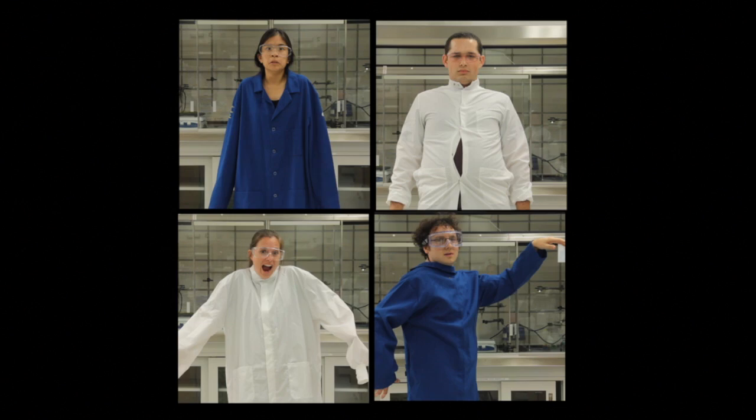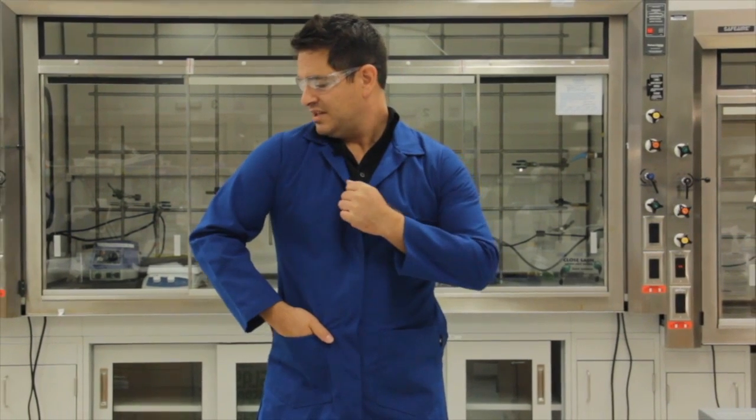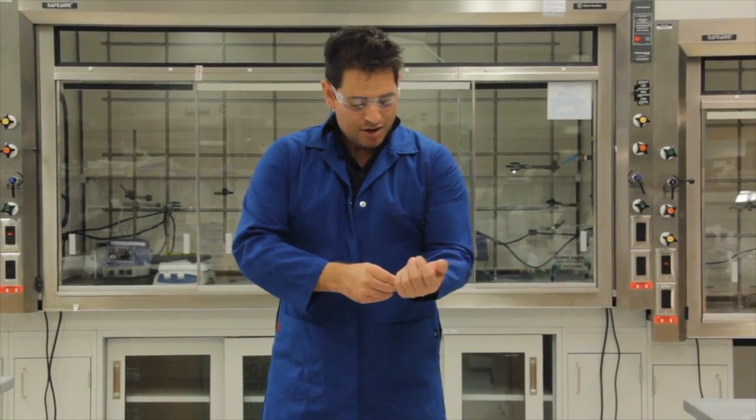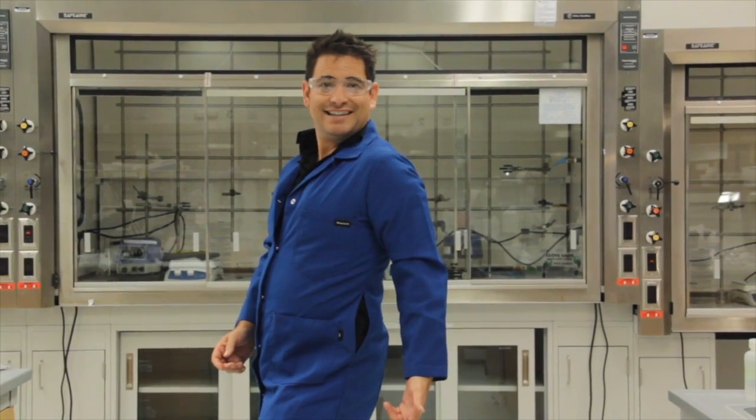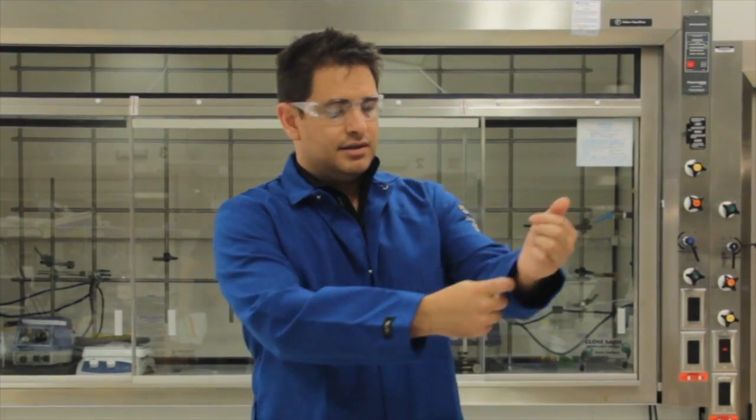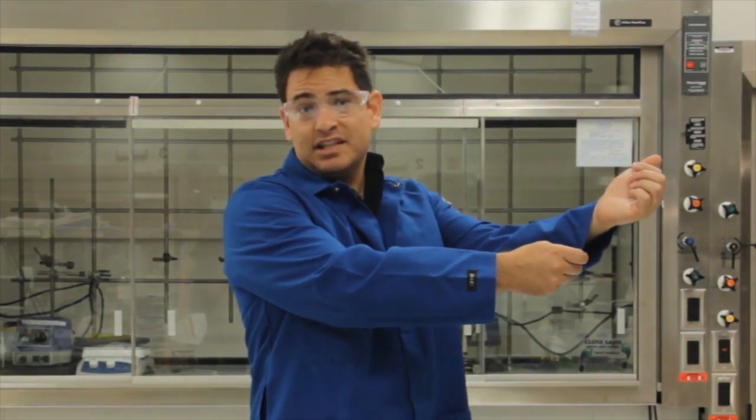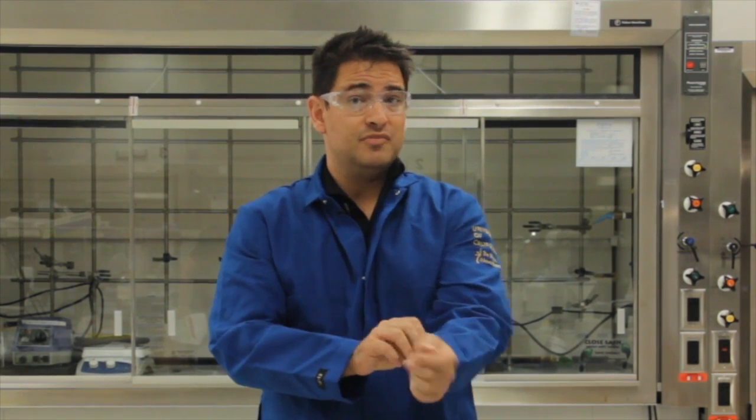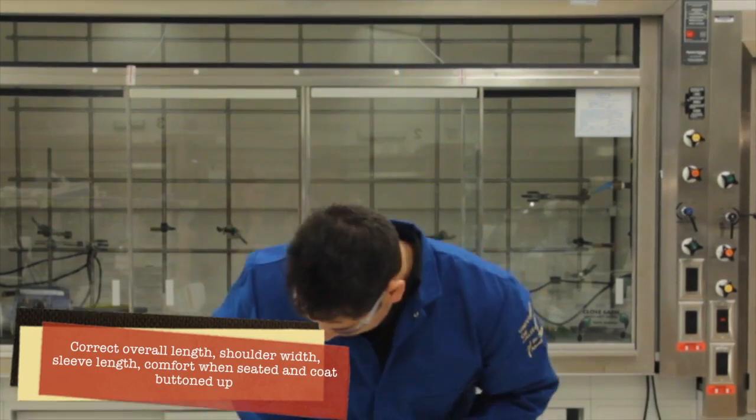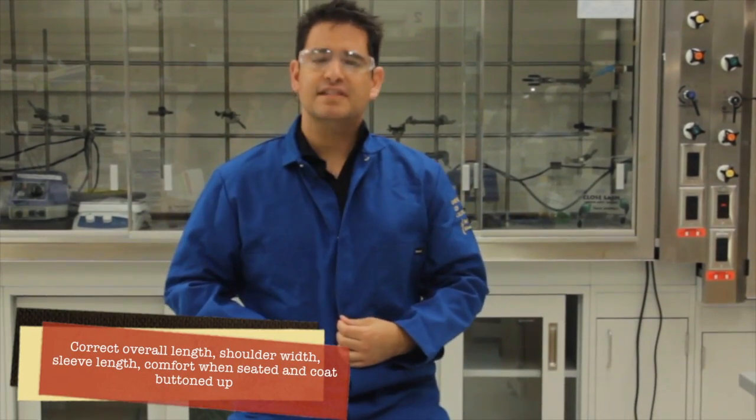If the lab coat does not fit correctly, it will not protect you properly. This one feels a little too tight and the sleeves are too short. Oh, I think it's a female coat. Sleeves should be at wrist length to protect exposed skin, but not too long. And don't roll them up, just get one that fits. That fits nicely.